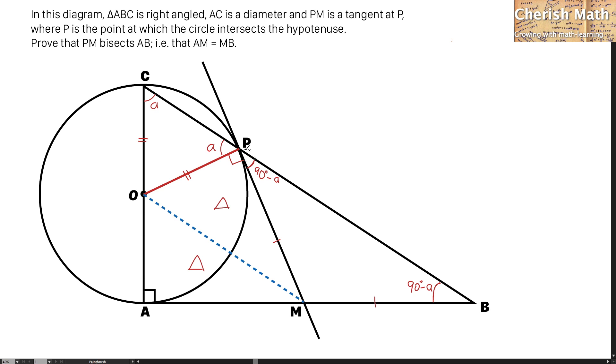And now, for the length of the PM is the same with the length of AM. And this is a proof to show that AM is in the same length with MB.